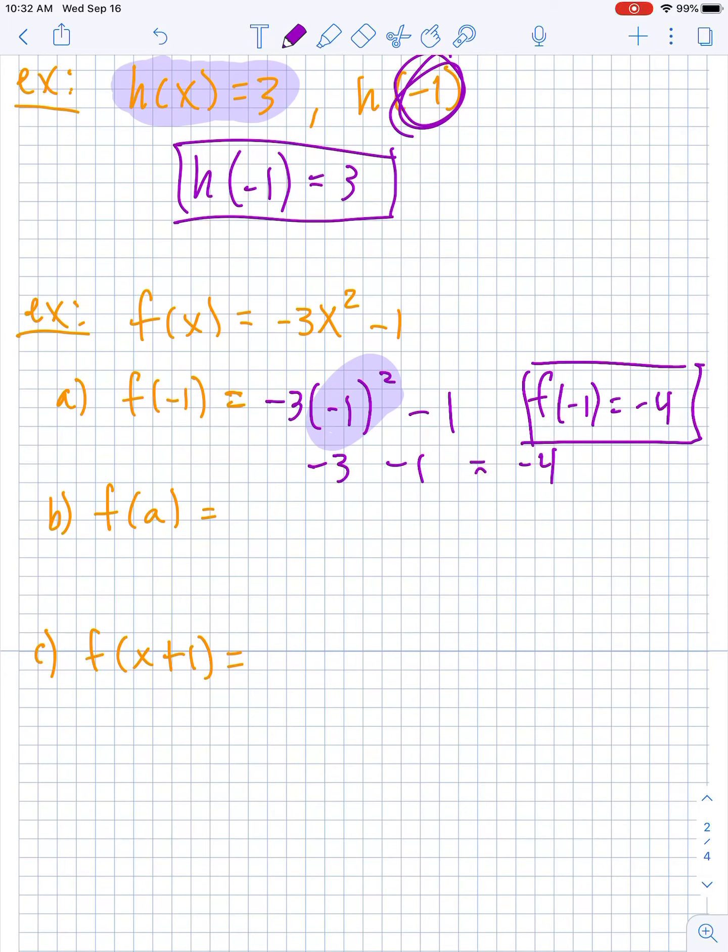Now f of a. Some people might get tripped up with that, like wait what? I don't understand what I was asking. It's still the same thing you've been doing before. You just replace every input with whatever is right here. So we're just going to replace all the inputs, the x's, with a's. So this becomes -3a² - 1, and then you know what, you're done with that part.